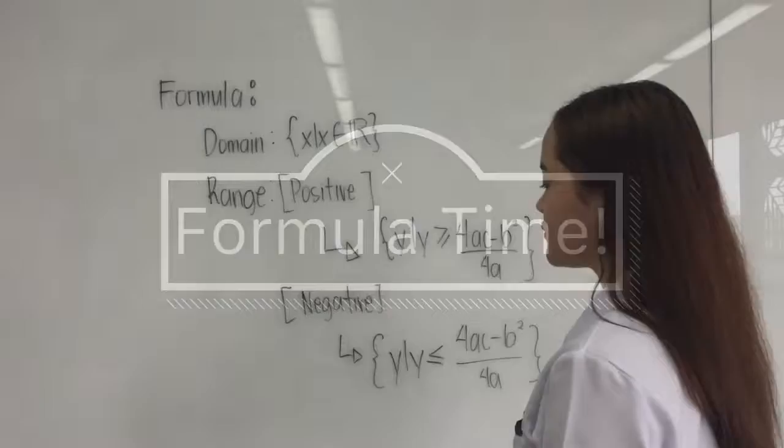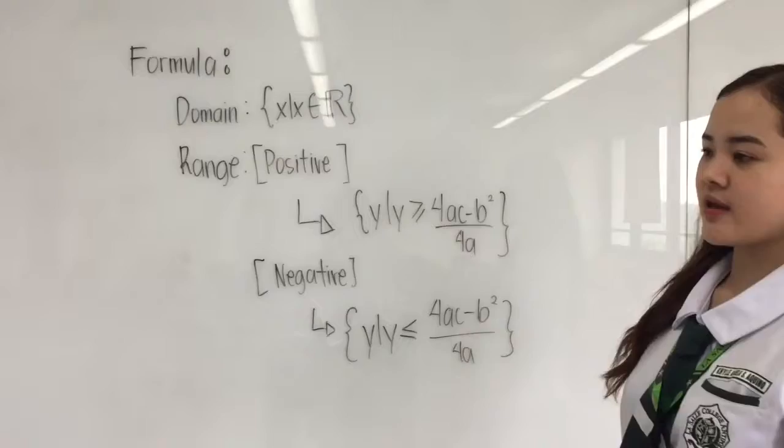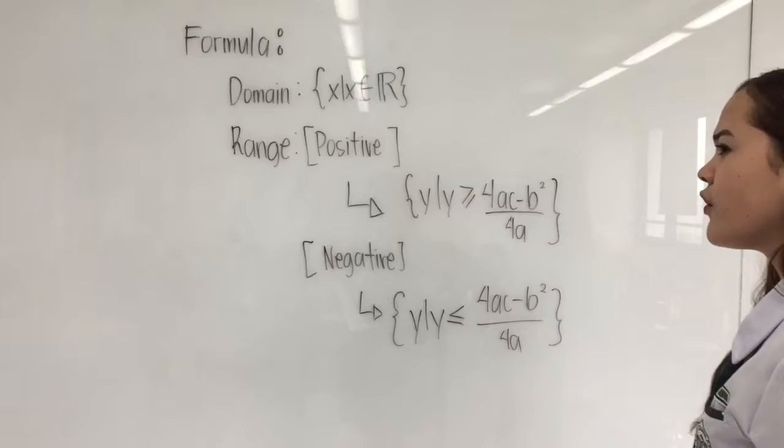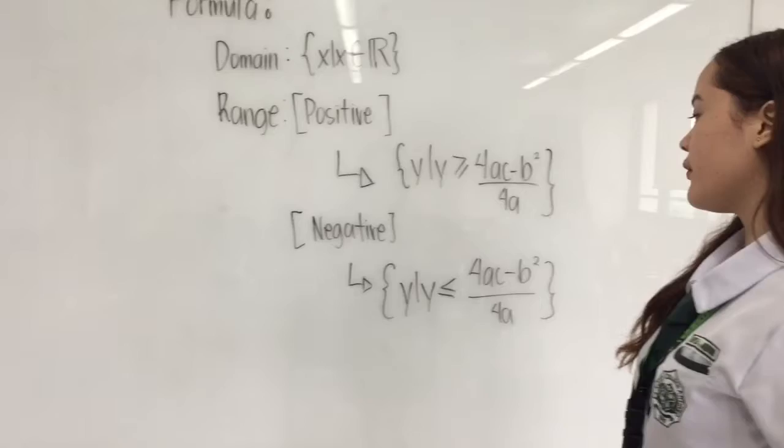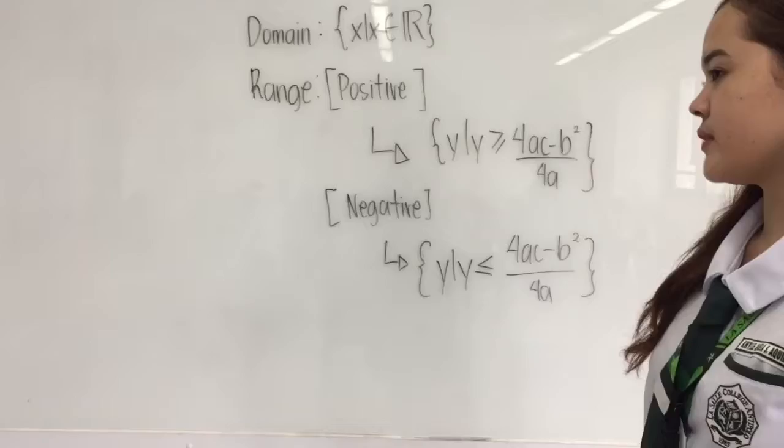For the range, we have two sets of formulas: the positive and the negative. For the positive, we have y such that y is greater than or equal to 4ac minus b squared, all over 4a. For the negative, we have y such that y is less than or equal to 4ac minus b squared, all over 4a.